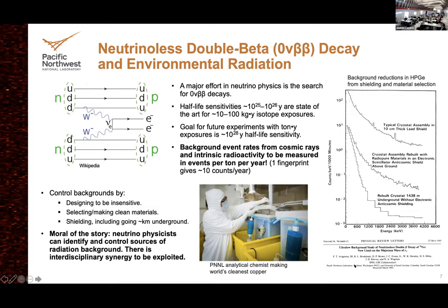Just to set the scale of the effort: it's a very rare process — maybe completely forbidden if neutrinos are not Majorana particles. The half-life sensitivities of current experiments are like 10^25 to 10^26 years — that's like the age of the universe squared. Current exposures are 10 to 100 kilogram-years. The goal for the next phase is ton-years — tons of material exposed for years of exposure — to get 10^28-year half-life sensitivity.